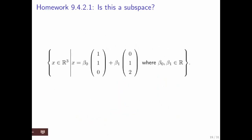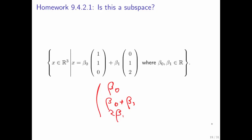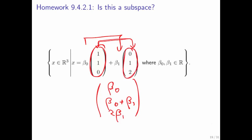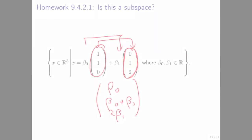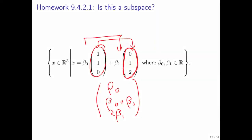What about this next one? It turns out to be the set of all vectors that look like beta0 for the first component, beta0 plus beta1 for the second component, and beta1 times 2 for the third component. We recognize this as a linear combination of the two vectors (1, 1, 0) and (0, 1, 2). It's the set of all linear combinations of those two vectors. It turns out that this is a subspace.